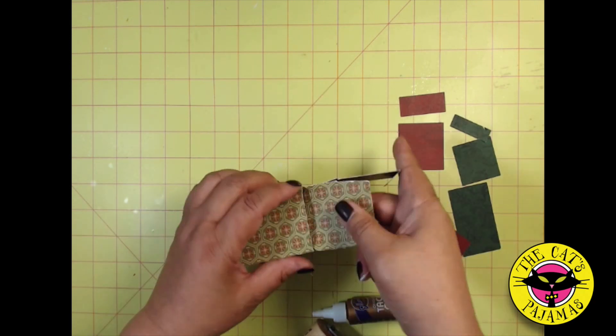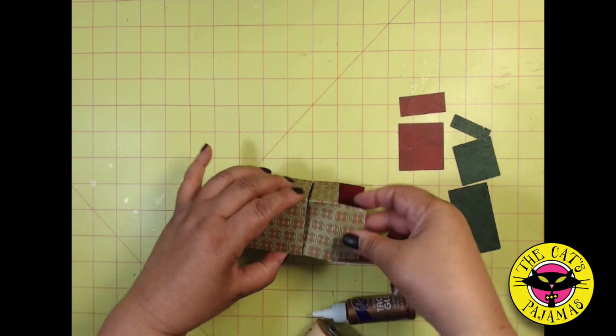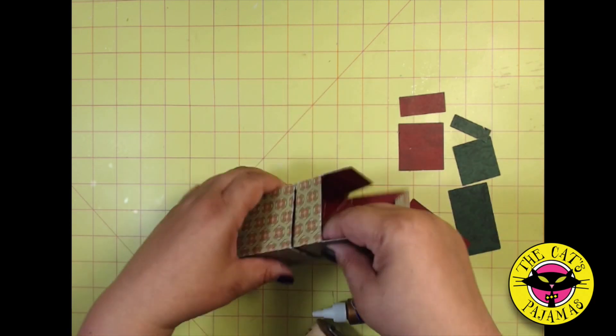Now gently fold in the section with the diamonds. And there you have your little twisty box.